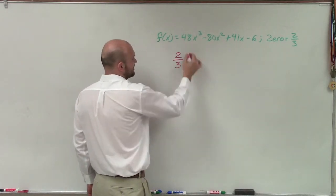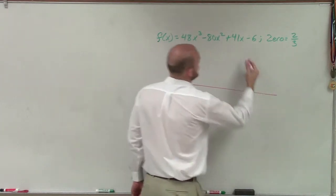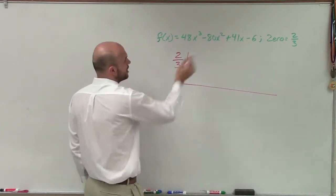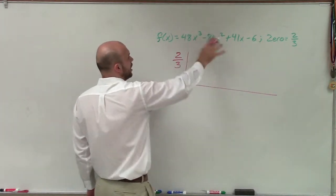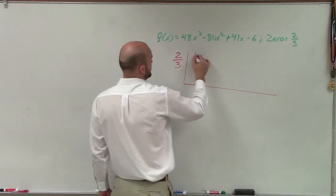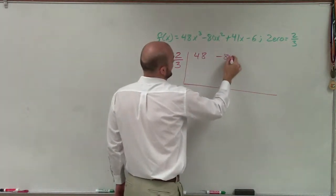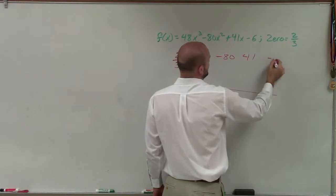So just like the rest of the problems we've had, we'll set up our synthetic division with our zero on the outside, and then I make sure I take each one of my coefficients and my constant and label them all the way going down in their descending order. So I have 48, negative 80, 41, and negative 6.